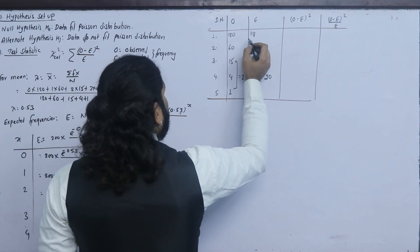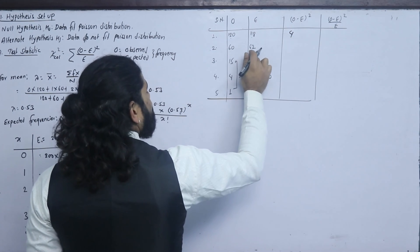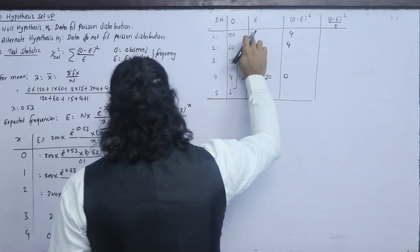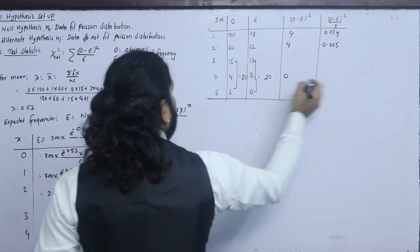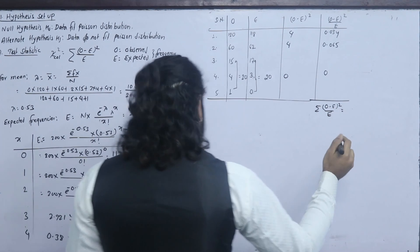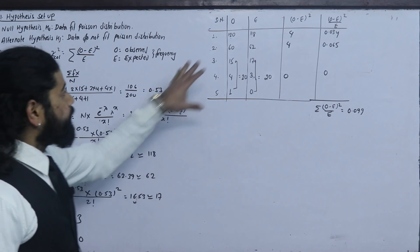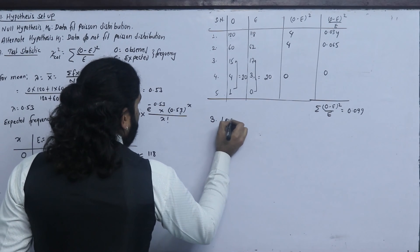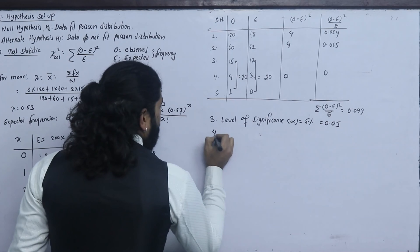Now we calculate O minus E squared divided by E. For first class: 120 minus 118 equals 2, squared is 4, divided by 118 gives 0.034. For second class: 60 minus 62 equals minus 2, squared is 4, divided by 62 gives 0.065. The summation comes to approximately 0.098.